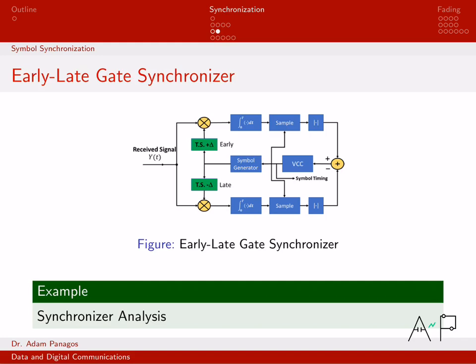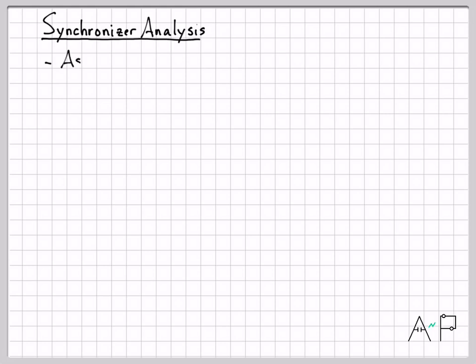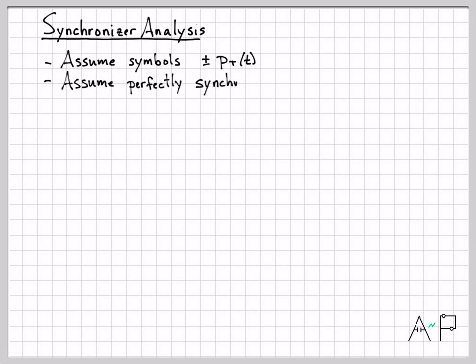That shifting is what allows us to get synchronized with the starting location of the input pulse. As the error signal goes up and down, the VCC adjusts its trigger timing to get our symbols synchronized with the input symbol stream. Now let's walk through the detailed math of these paths to see how we get an error signal with the desired properties. We first assume perfect synchronization, then analyze the off-by-epsilon case.